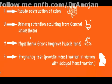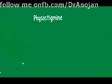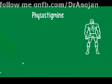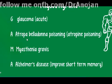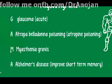For physostigmine, the mnemonic is 'Palwan GAMA' - a Pakistani famous wrestler. G is for glaucoma treatment, A is for atropine/belladonna poisoning, M is for myasthenia gravis, and A is for Alzheimer's disease. So physostigmine is used in glaucoma, atropine poisoning, myasthenia gravis, and Alzheimer's disease.